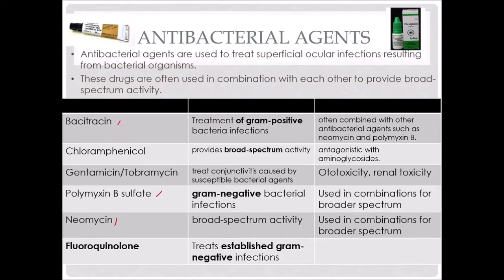Chloramphenicol has broad-spectrum activity on its own, but it is antagonistic with aminoglycosides, meaning we would not want to give it at the same time. Gentamicin and tobramycin are aminoglycosides used to treat conjunctivitis caused by susceptible bacterial agents. They can cause ototoxicity — problems with the ears — and renal toxicity, even if you're giving it in the eyes, so we do have to be careful. Enrofloxacin is a typical fluoroquinolone that we use in the eyes; the most common form is Baytril. This treats established gram-negative infections, so it's very helpful.